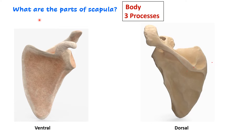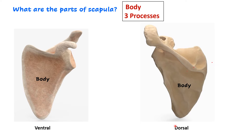Next you will be asked to describe the parts of the scapula. Scapula has a body and three processes. We should know that this is the ventral surface and this is the dorsal surface of the scapula. The body is a flat triangular structure — you can see the flat triangular part of the scapula here, which is known as the body of the scapula.